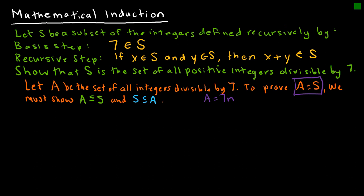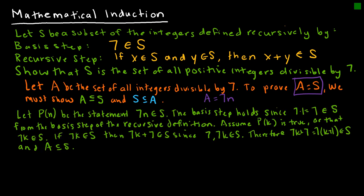I've color-coded the proof here. For the green, this is the proof using mathematical induction. I have to show first that I have an element in A that belongs to S, and then that all elements of A belong to S. So P(n) is going to be the statement '7n belongs to S.'